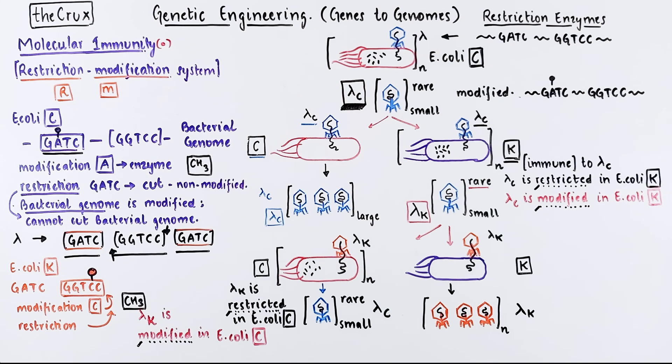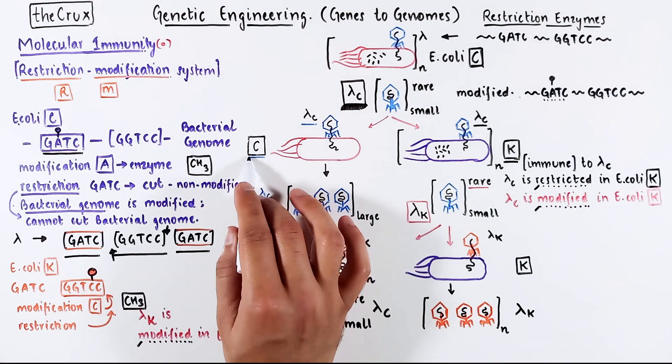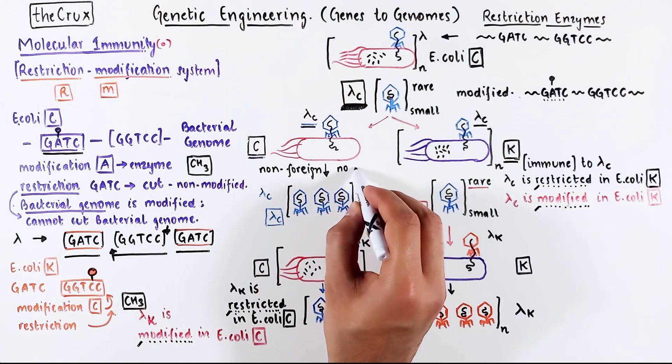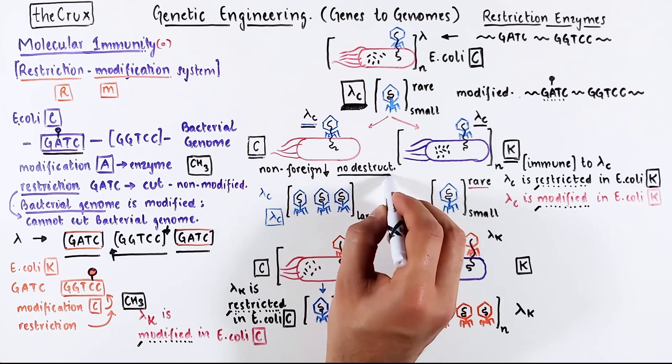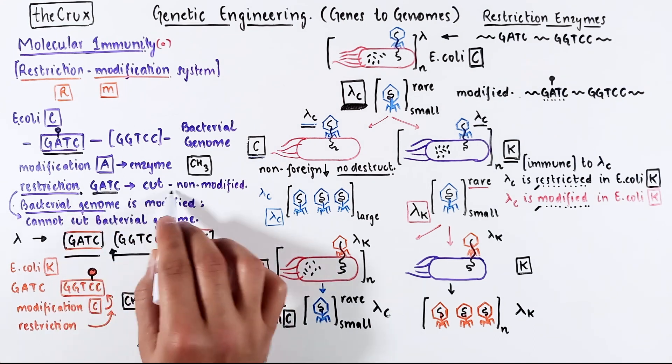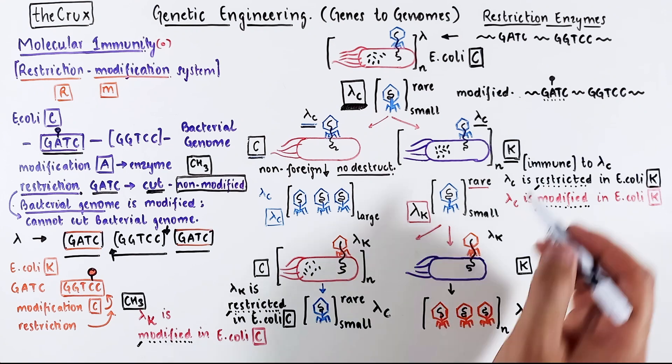Now if lambda C reinfects E. coli C, the C bacteria cannot recognize lambda DNA as foreign and therefore it escapes restriction enzyme cutting. By the rules we established, remember the restriction enzyme can only cut non-modified DNA. In lambda C, the GATC is modified.